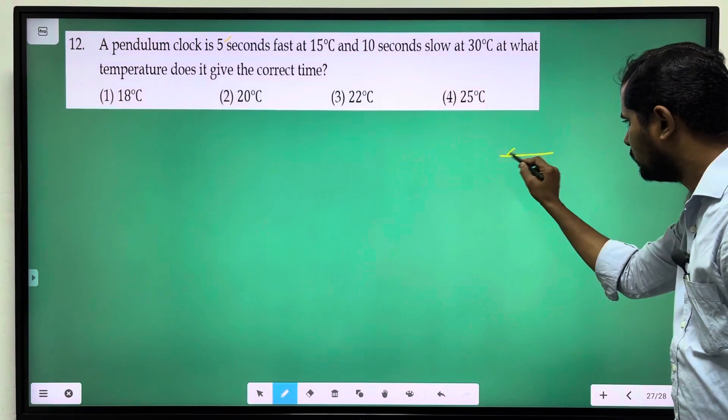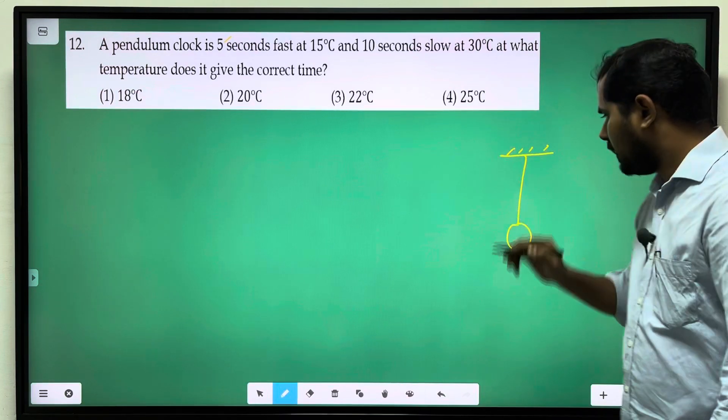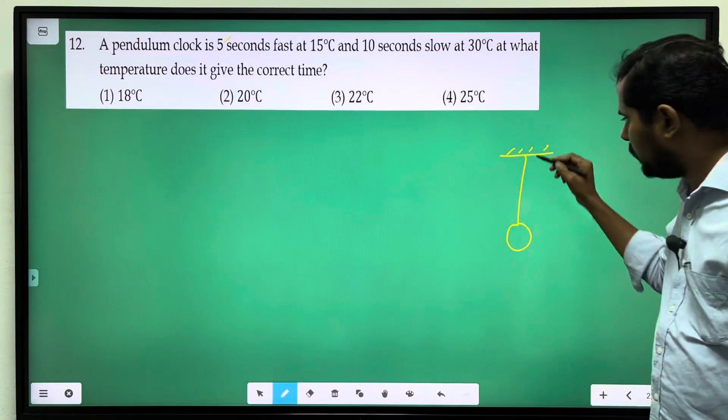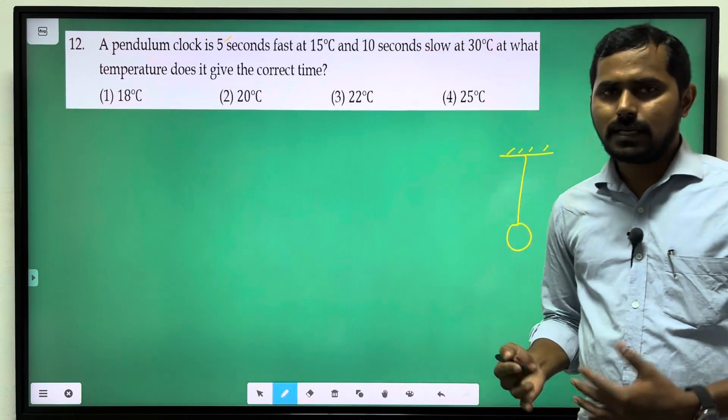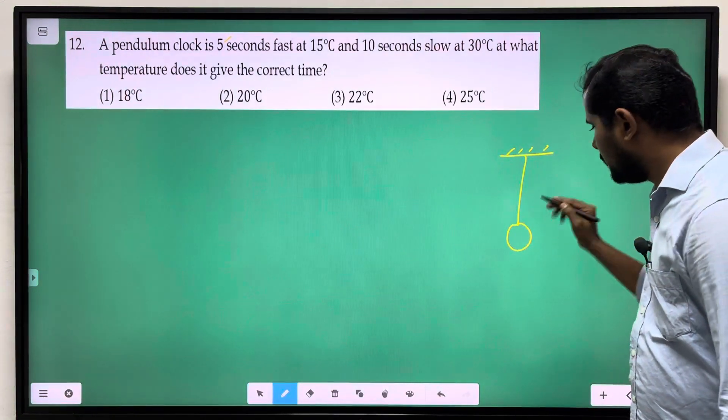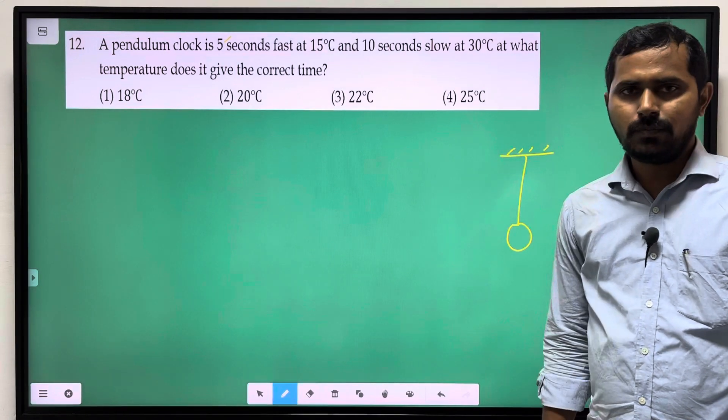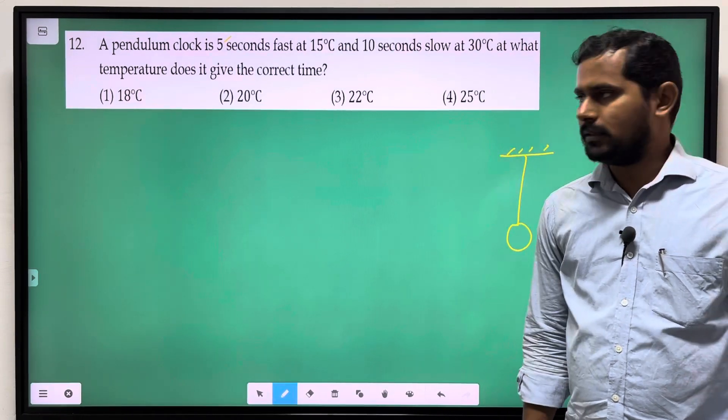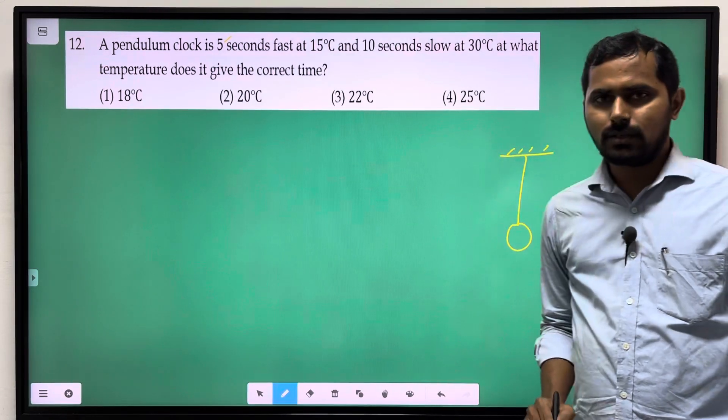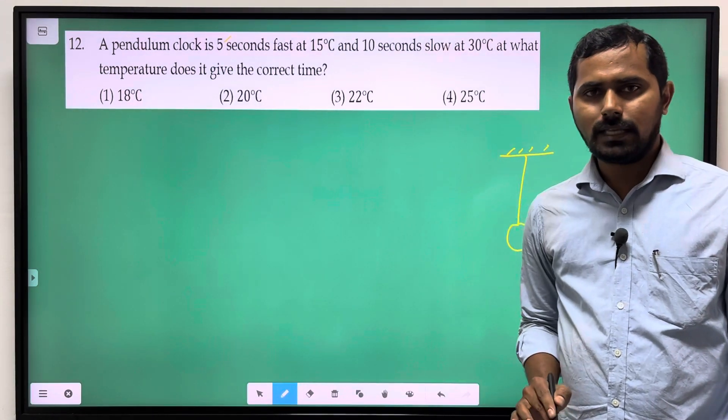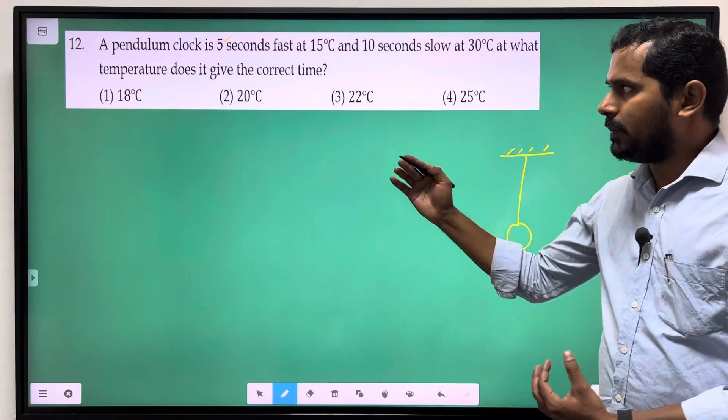One simple pendulum - one string, one bob. Temperature raise, length increase due to thermal expansion. Temperature reduce, shrinkage. There will be a change in time. We have two data.